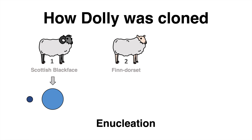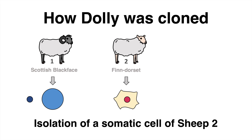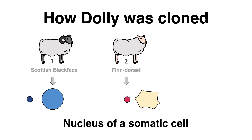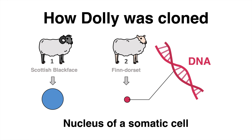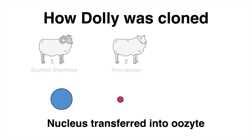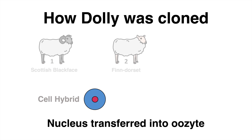From Sheep 2, a different species of sheep, they took a somatic cell and isolated the nucleus, which contains all the genetic information that will later be the blueprint determining the development of Dolly. The nucleus was transferred into the oocyte, and the result of this nuclear transfer is a hybrid cell.